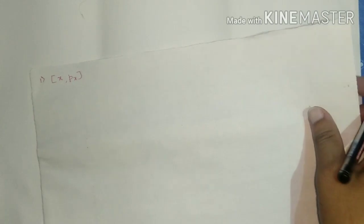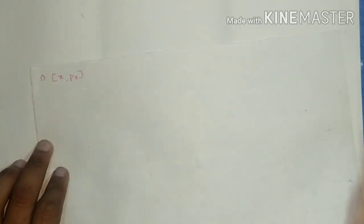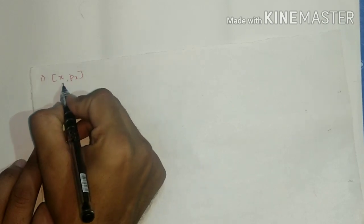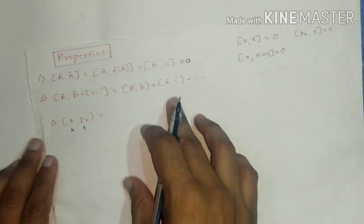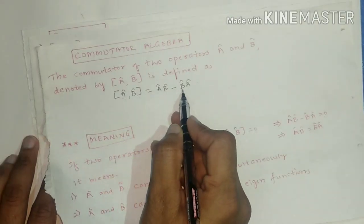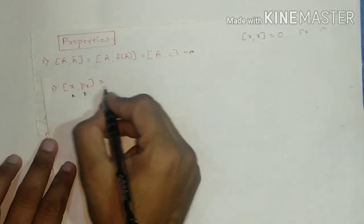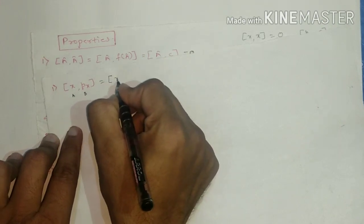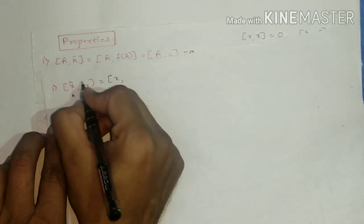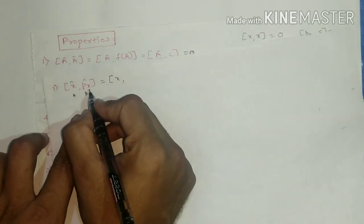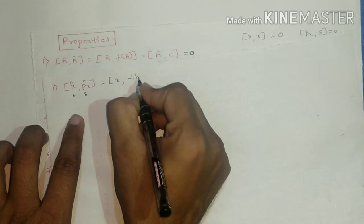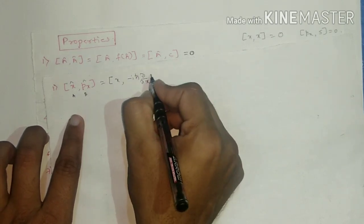Let us solve [x, p_x]. Using the basic definition [A, B] = AB − BA, we write p_x as −iℏ·∂/∂x. So [x, p_x] = x·(−iℏ·∂/∂x) − (−iℏ·∂/∂x)·x.